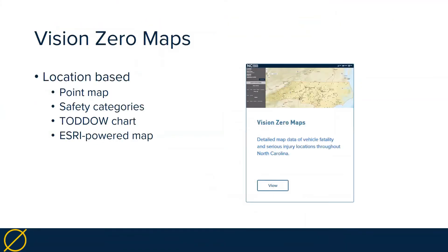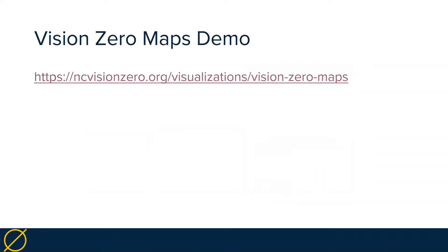The next tool is a bit old in my opinion — not the data, just the development platform. Vision Zero Maps was in development about five or six years ago and has been maintained only in minor ways. Yes, a five-to-six-year-old tool is considered old and busted compared to the new hotness we are developing now. It's still great at location data — it gives a decent point map and actually has crash reports linked when you click on a point.